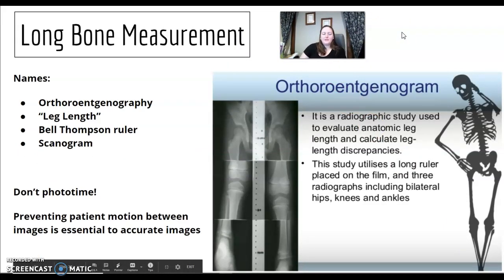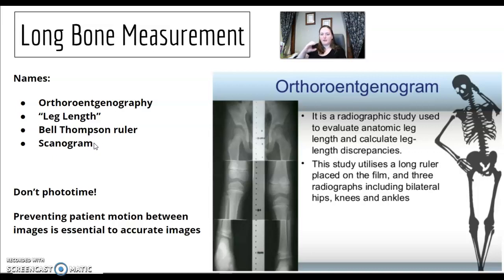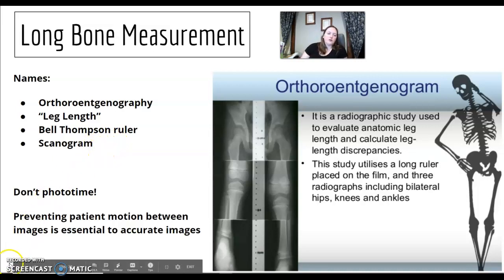Long bone measurement — know this terminology: orthoroentgenography, leg length study, Bell-Thompson ruler, scanogram. It can be used for upper or lower extremity — it is a long bone measurement, not just for legs. It's done for length discrepancy. Preventing patient motion between images is essential so the patient doesn't shift on the ruler.